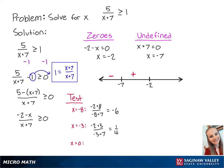For x equals 0, we have negative 0 plus 7, which is equal to negative 2 sevenths. Since this number is negative, this means that x values greater than negative 2 will make the left side of the inequality negative.